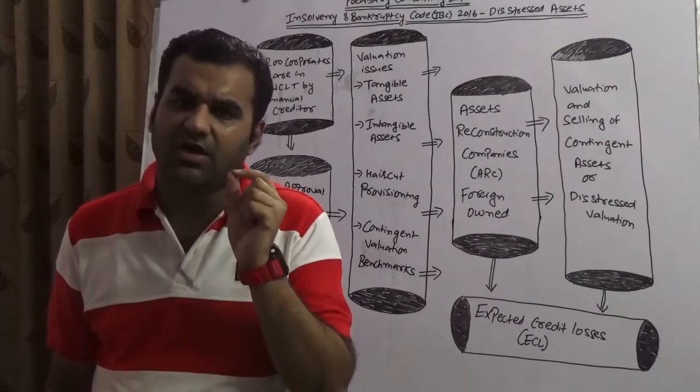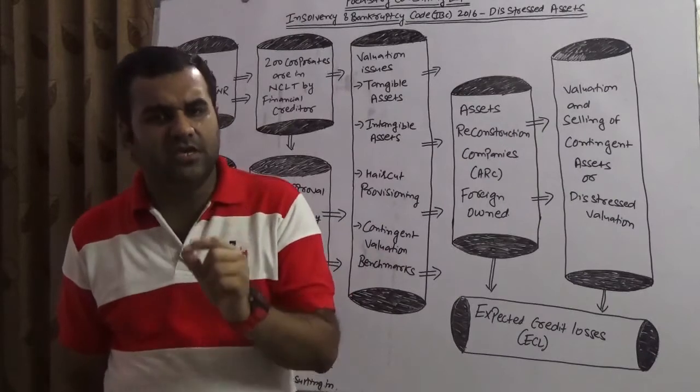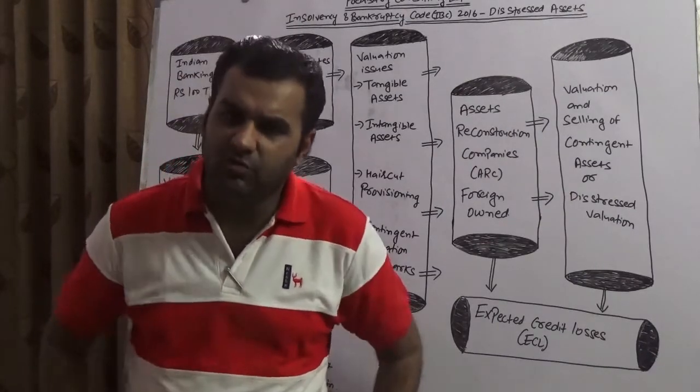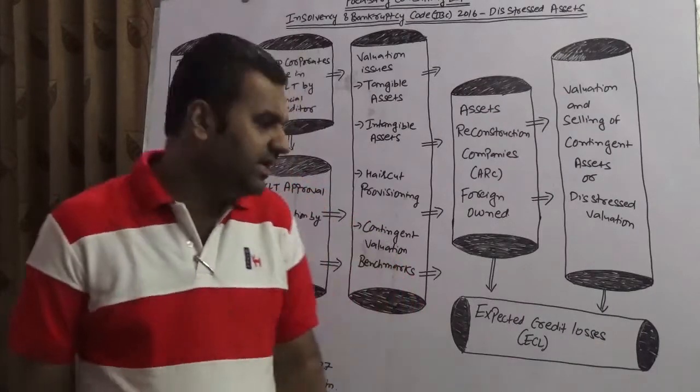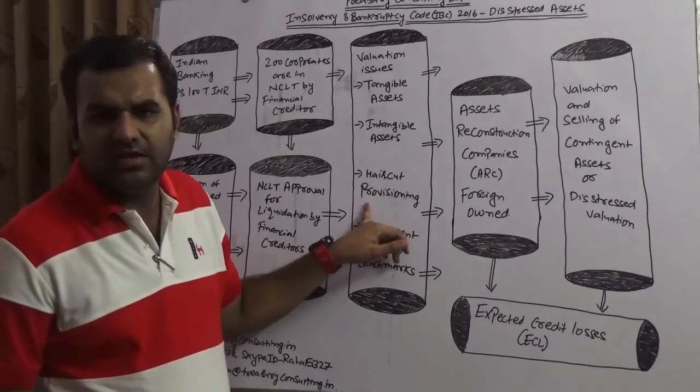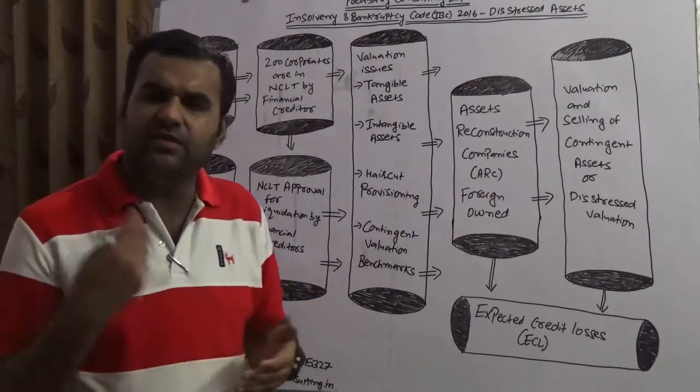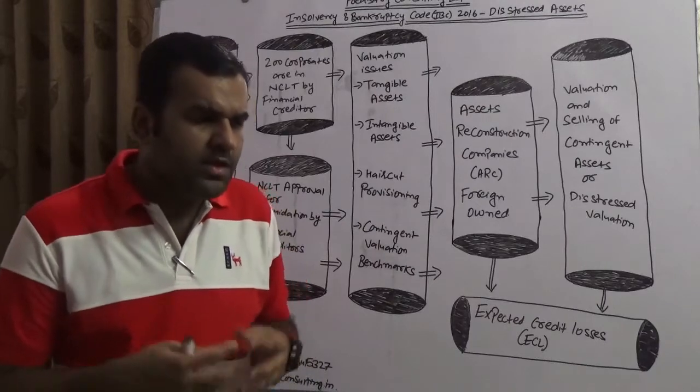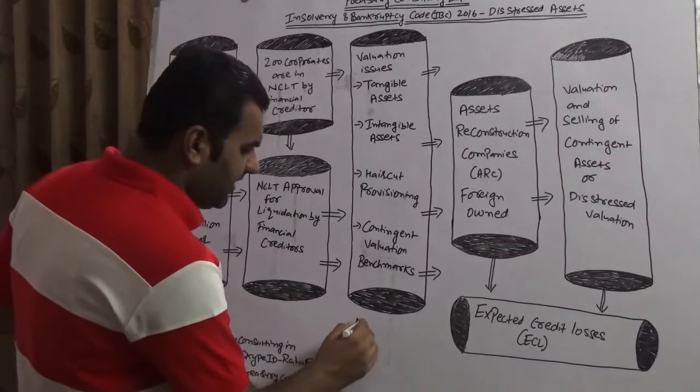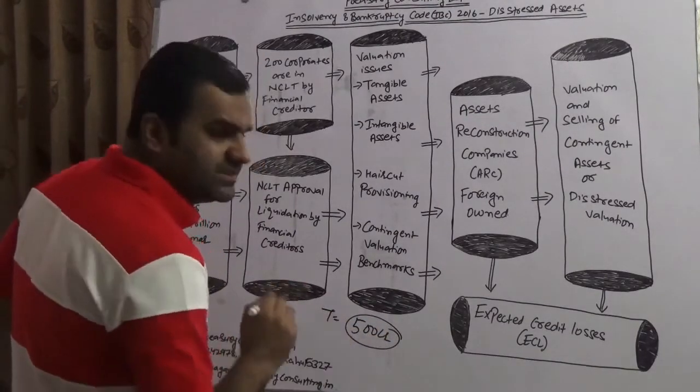What NCLT can say, they can have a haircut. But if you would have read IBC carefully, the other biggest silly mistake which people have done who made the IBC is haircut provisioning. They have not taken any haircut provisioning. What is the haircut provisioning? Assuming you are selling Kingfisher today. The value of the tangible assets of Kingfisher is assuming 500 crores, assuming. I'm taking just a hypothetical example. And assuming intangible is 1500 crores.